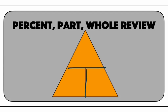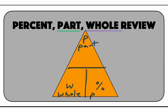At the top, we're going to write in a P, and this is going to be the part section — so that's our part right there. Now at the bottom left, we're going to put a W, and this is going to be our whole section of the triangle. And then on the right, of course, we're going to put in what is missing out of three: it's going to be percent. It's best to draw a percent sign so you don't have to use the P twice — we've already used it for part. So we've got percent, part, and whole.